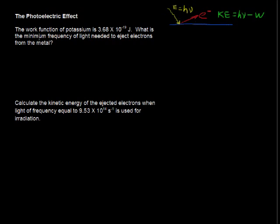So in this question, we have the work function of potassium is 3.68 times 10 to the negative 19th joules. What is the minimum frequency of light needed to eject electrons from the metal? So just enough to dislodge it. So that's saying, if it's just dislodging it, this work function is when the kinetic energy equals 0.